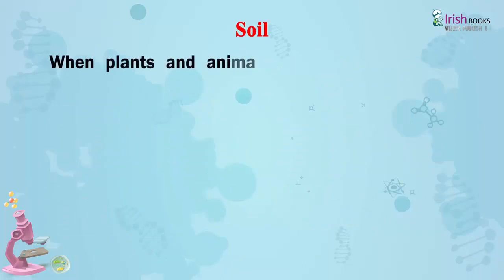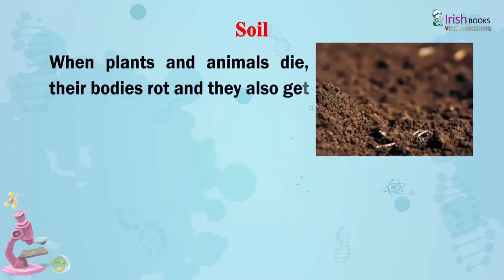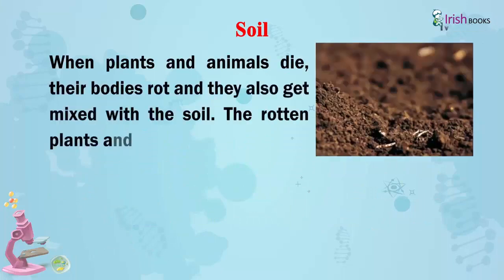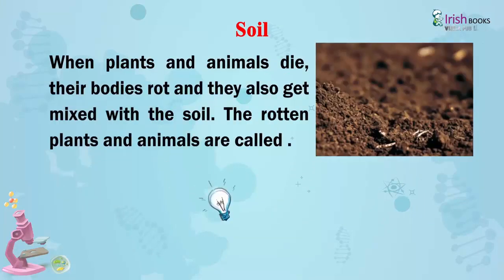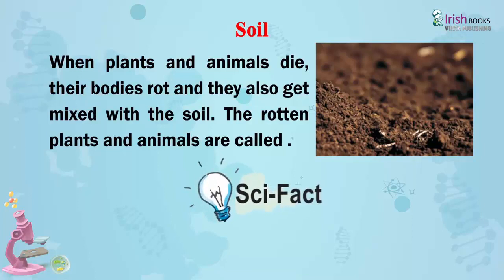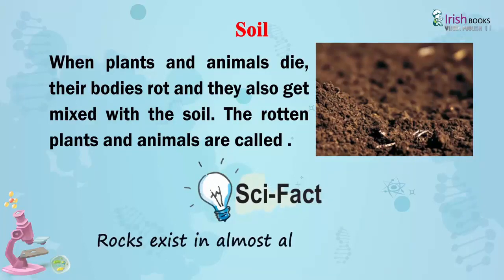When plants and animals die, their bodies rot and they also get mixed with the soil. The rotting plants and animals are called humus. Scientific fact: rocks exist in almost all types of soil.